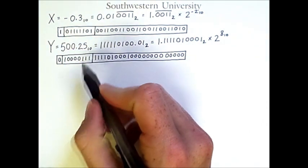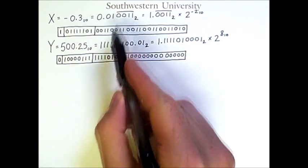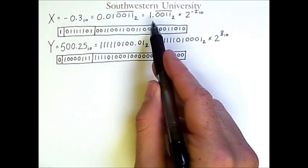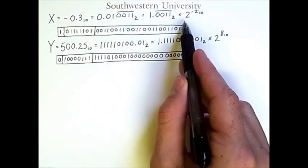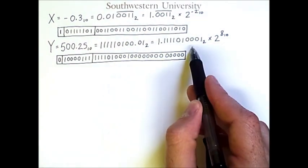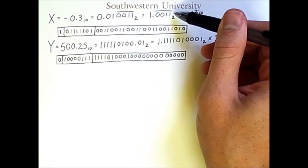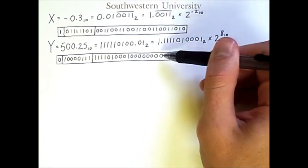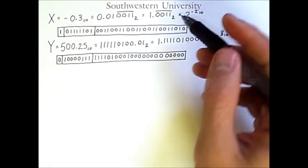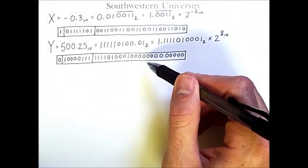Now, I've already done some work for you. I've converted each number to binary, then converted that to scientific notation, and then converted those numbers into floating point representation. You should be able to confirm all of these steps.